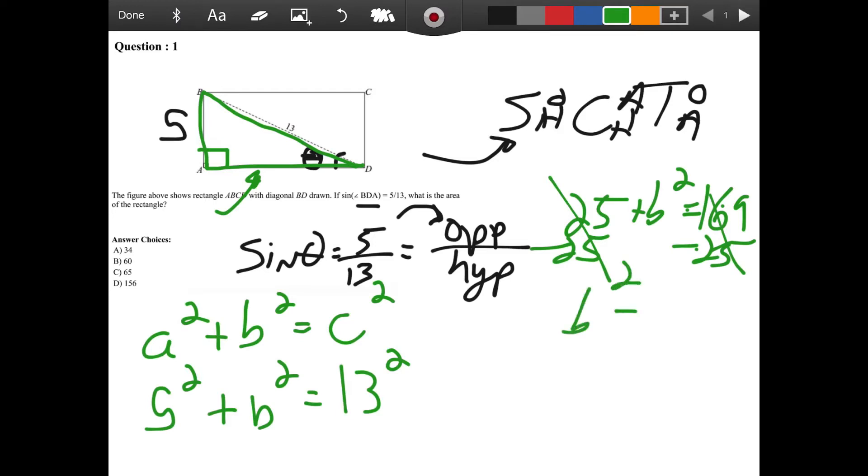We have 25 plus B squared equals 169, so minus 25 from both sides. And we get B squared equals 144. Take the square root of this, and we get B, or the base of the triangle, is equal to 12.